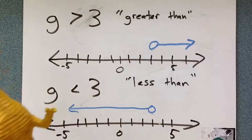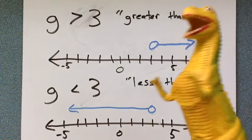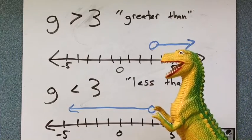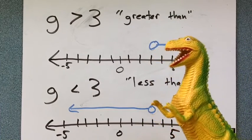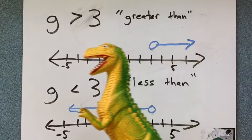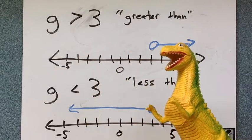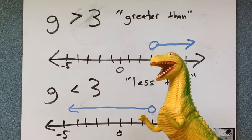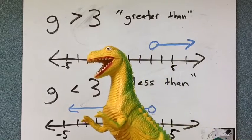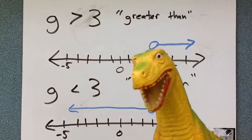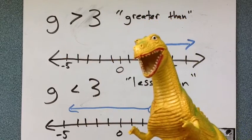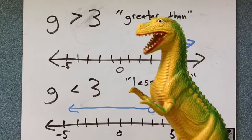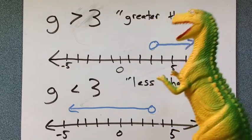Similarly, G is less than 3. So I started at 3 with an open circle, because it does not include 3. And the blue line is all values less than 3. So G could be 2, 1, 0. It could be negative 4. It could be negative a million. It does not matter. Any value less than 3 can be G.